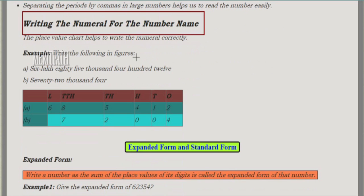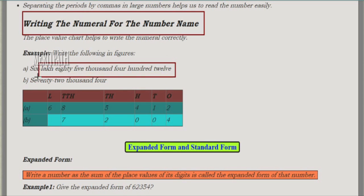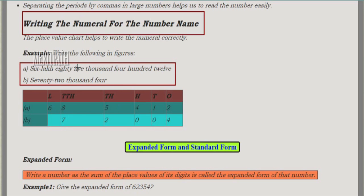The place value chart helps to write numerals correctly from number names. For example, let's take the number: six lakhs eighty-five thousand four hundred and twelve. We need to convert this word form into a numerical value and insert it into the place value chart. The next number is seventy-two thousand and four, which we also represent as a numeral in the chart.